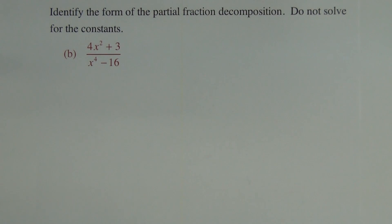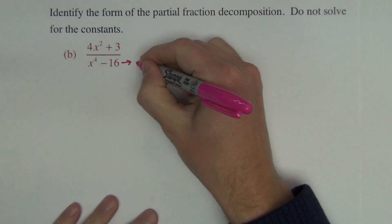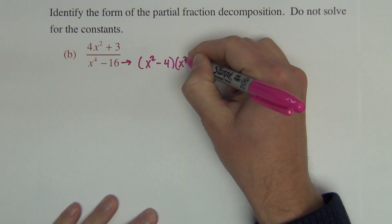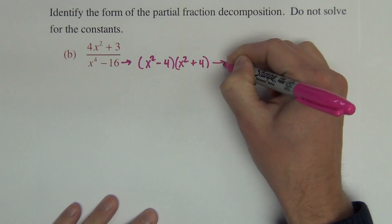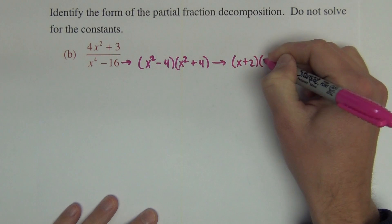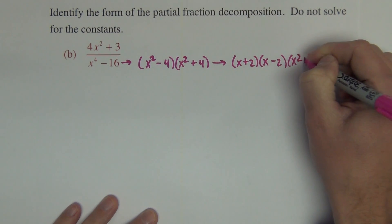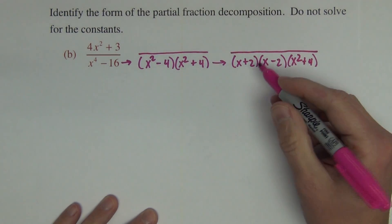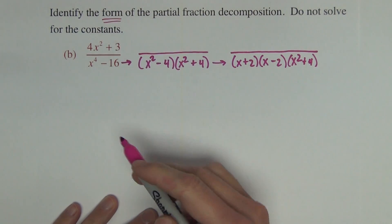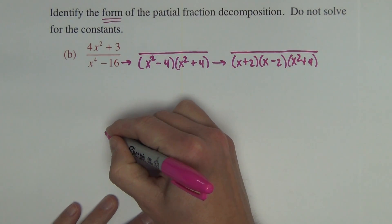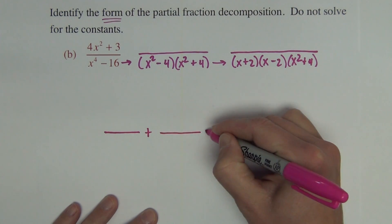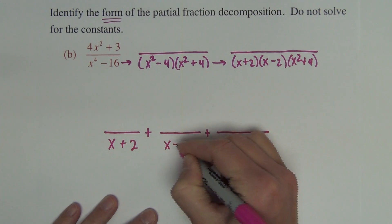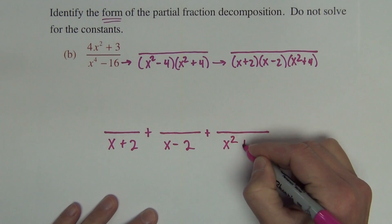Next problem — we look at that denominator and recognize it needs to be factored. So that would be x squared minus 4 times x squared plus 4, which becomes x plus 2 times x minus 2 times x squared plus 4. For the form of the decomposition, we set up one fraction for each of those factors: one for x plus 2, one for x minus 2, and one for x squared plus 4.